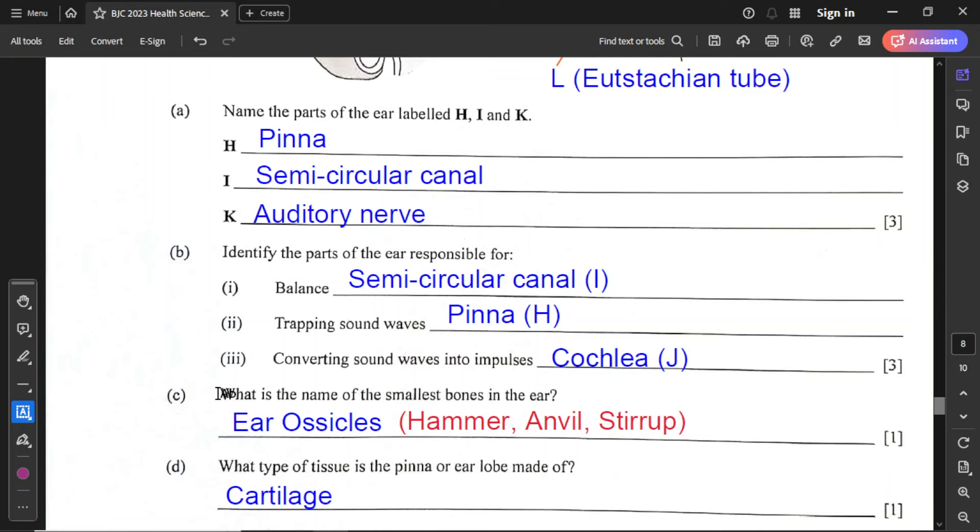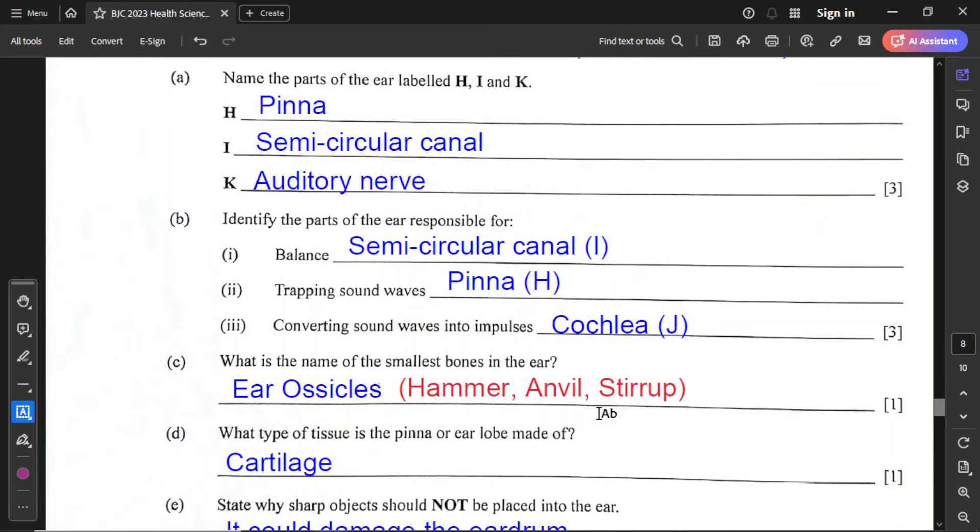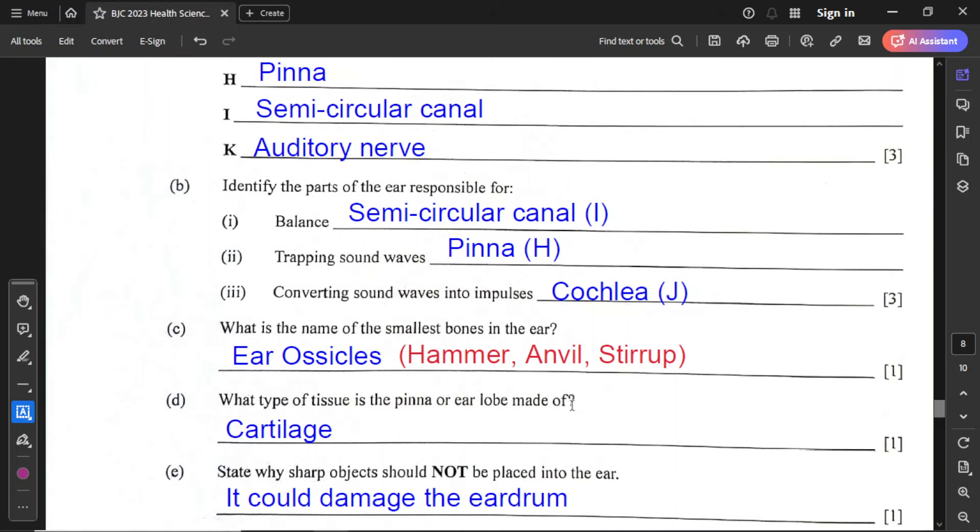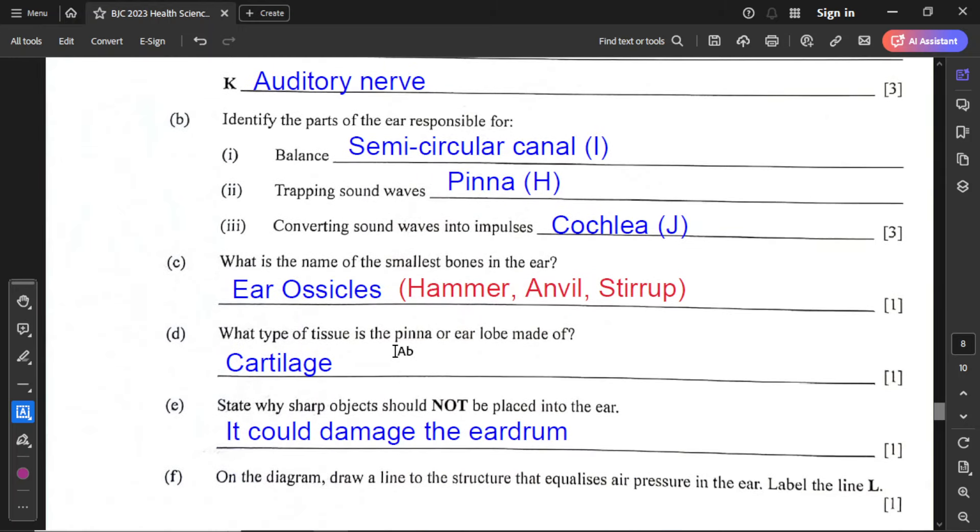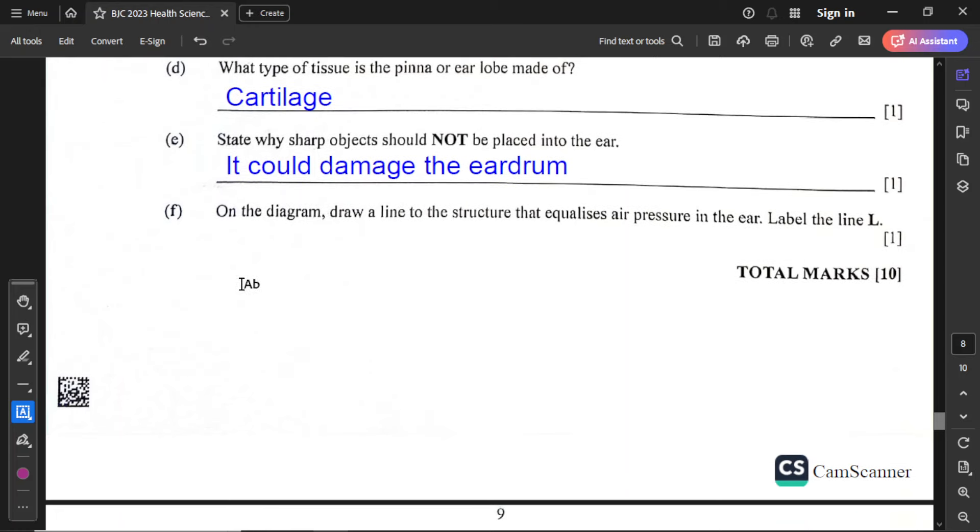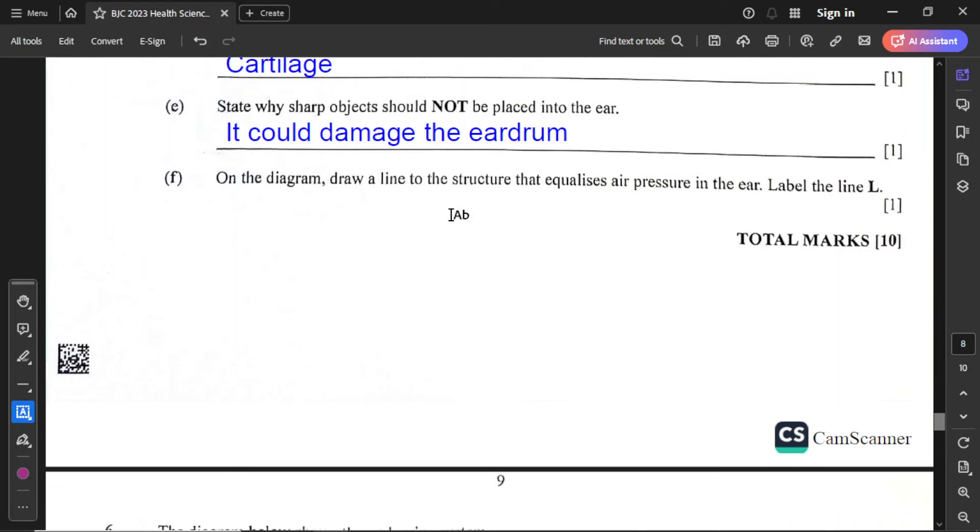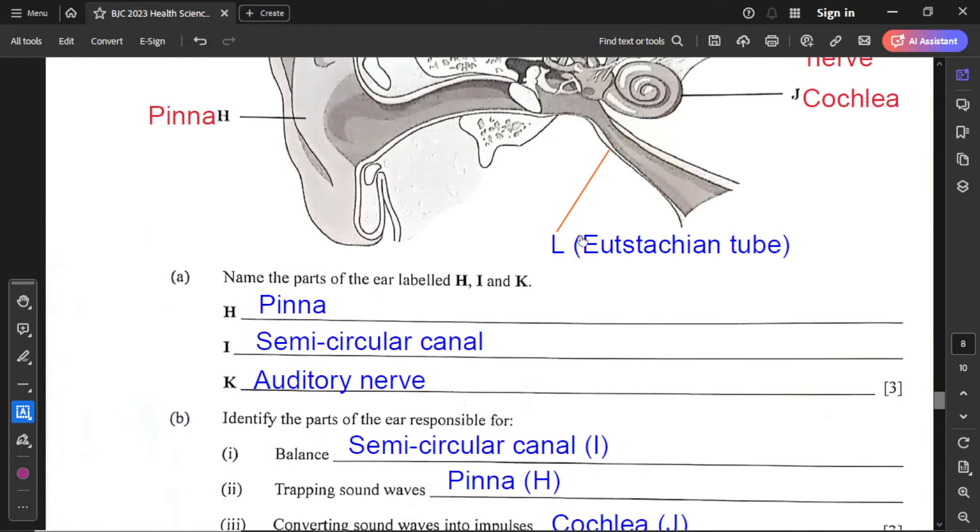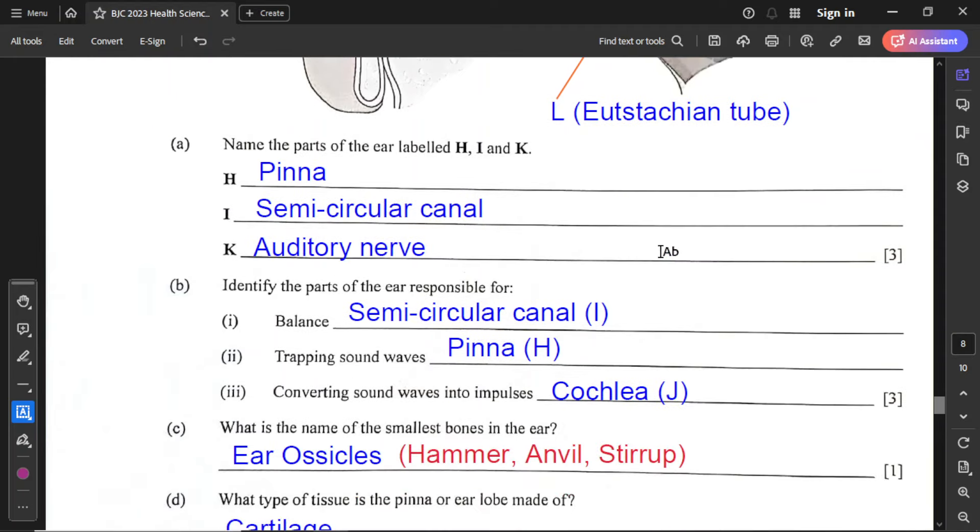For part C, what is the name of the smallest bones in the ear? That is the ear ossicles. The common names for the ear ossicles in order are hammer, anvil, and stirrup. They're also called malleus, incus, and stapes. For part D, what type of tissue is the pinna or ear lobe made of? That is cartilage. For part E, state why sharp objects should not be placed into the ear. It's simple: sharp objects could puncture or damage the eardrum. For part F, the last part, in the diagram draw a line to the structure that equalizes air pressure in the ear. Label the line L. That is the Eustachian tube, and we label that L right there.